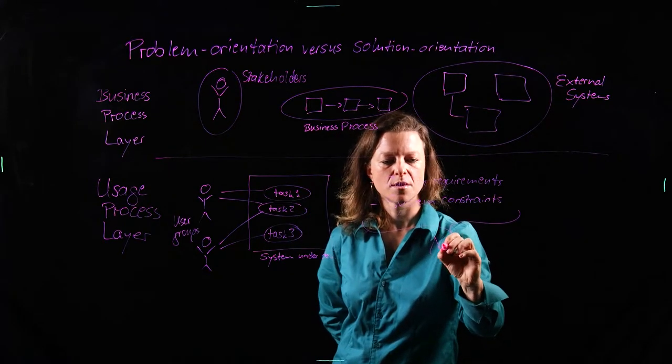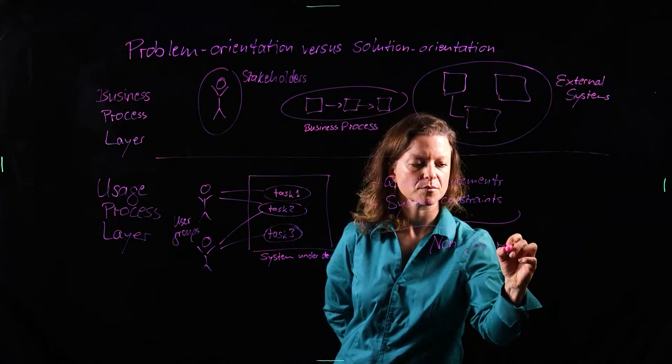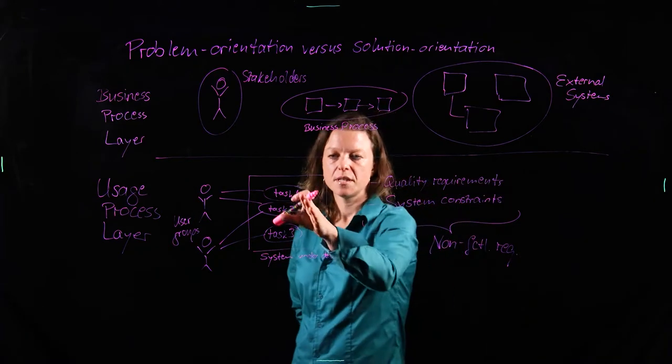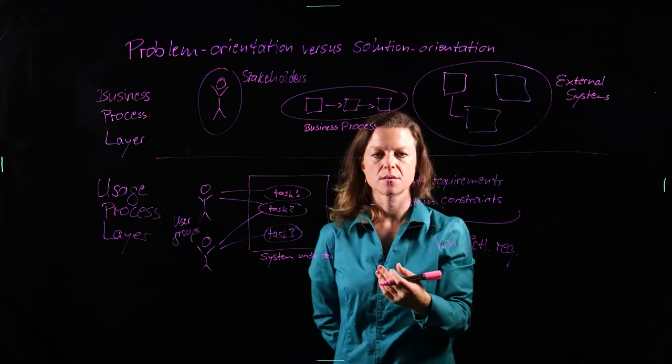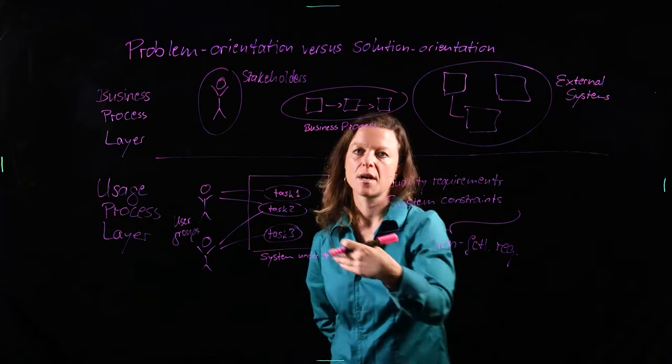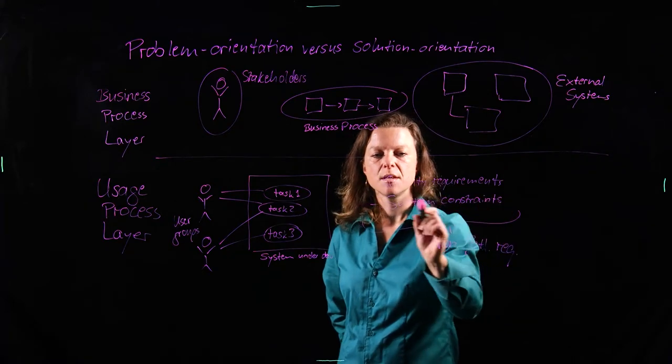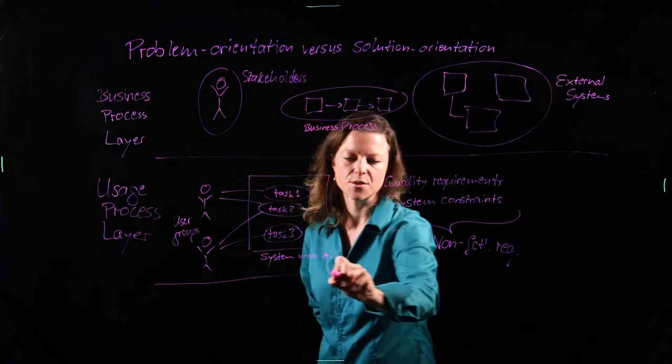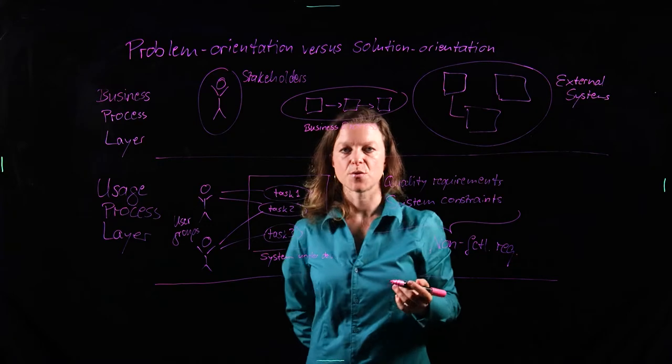And both of these are subcategories of non-functional requirements. So the quality requirements say things like the database needs to respond within two seconds, the system should be highly reliable. And the system constraints, they make assurances about what we will need once we get to the next layer for the system to work as specified.